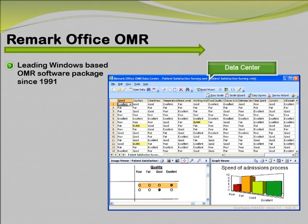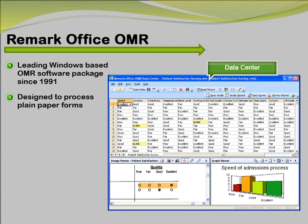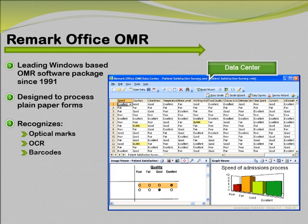In 1991, Remark Office OMR was released as an alternative to traditional OMR solutions. This unique software package is designed to process plain paper forms such as tests and surveys. It recognizes optical marks, machine-generated text — also known as OCR — and barcodes. Handwritten text can be captured as images, selected as data entry fields, or coded by theme.